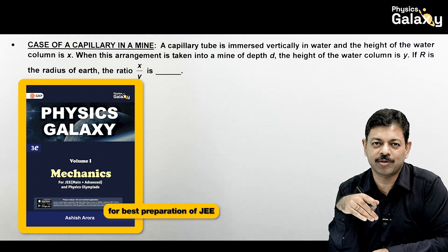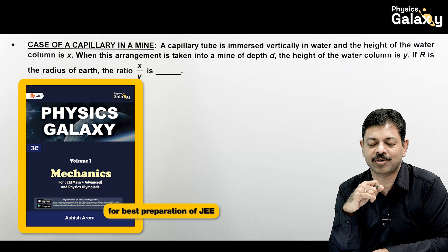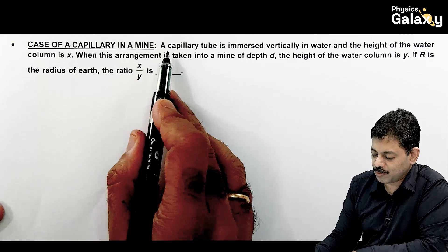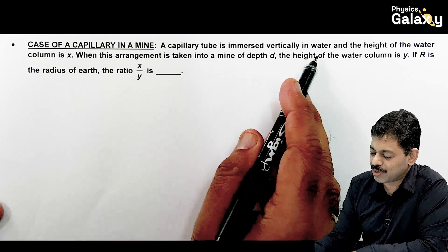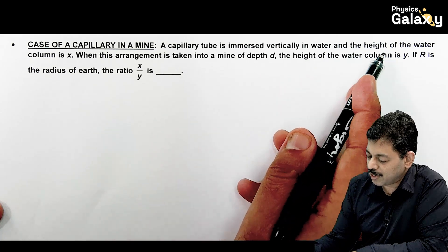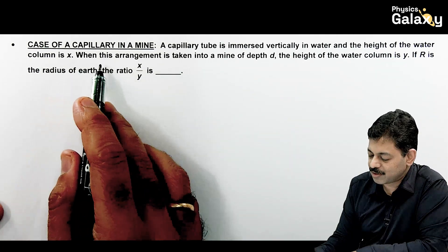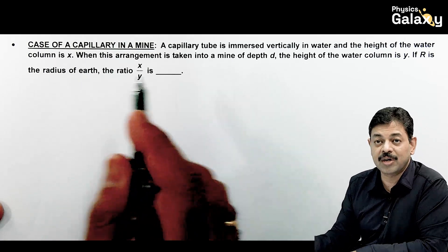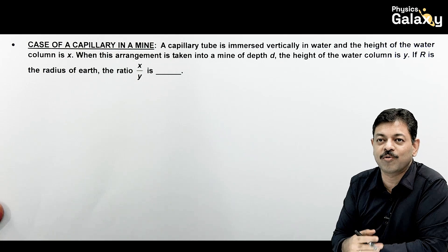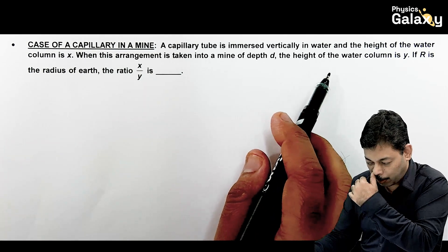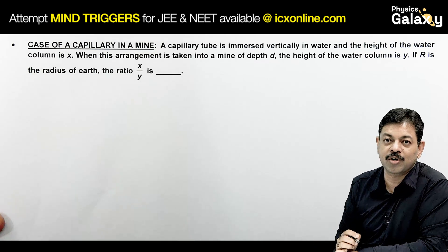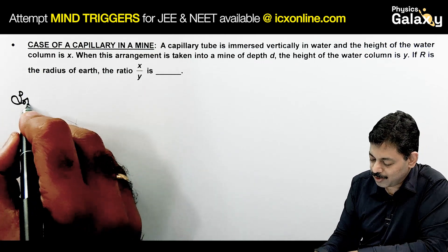The value of g changes if we go above the Earth surface or we go below the Earth surface. In both cases value of g reduces. Based on this, variety of cases are framed. This is one such case where we have a capillary tube immersed vertically in water and the height of the water column is x. When this arrangement is taken into a mine of depth d, certainly inside the Earth at a depth the value of g will reduce.